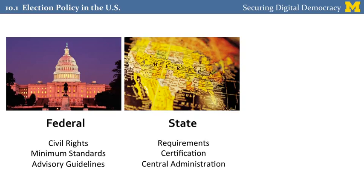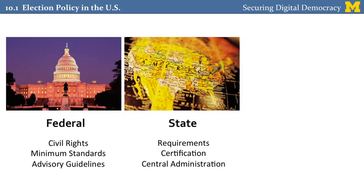Most of election policy in the US gets set at the state level. States set the requirements for elections within their borders. They perform certification of election equipment, and they're the central focus of election administration. In each state, usually the Secretary of State's office is responsible for conducting elections and has the final say about how elections are conducted within the state.